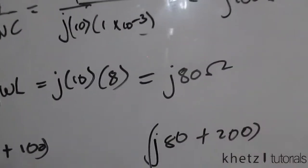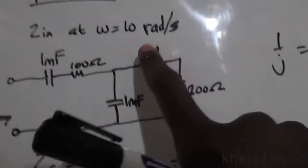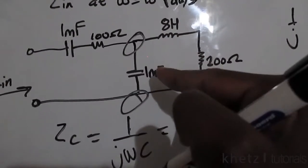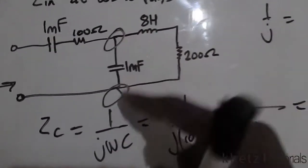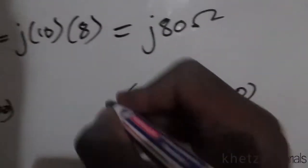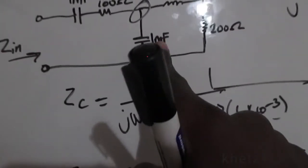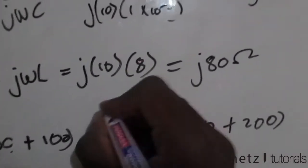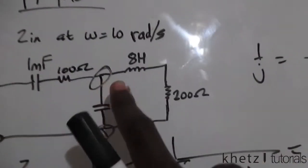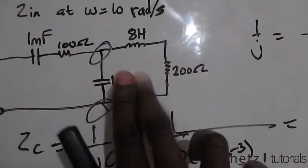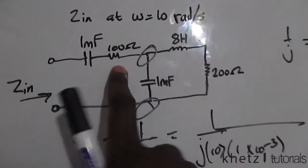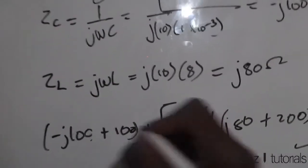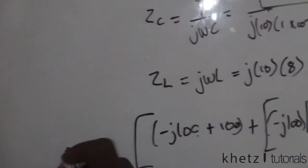This series combination is actually in parallel with the other 1 millifarad capacitor, because they share two nodes. The impedance for that 1 millifarad capacitor is also negative j100. So in the end, the parallel combination of these two branches will be added to give us our input impedance Zin.